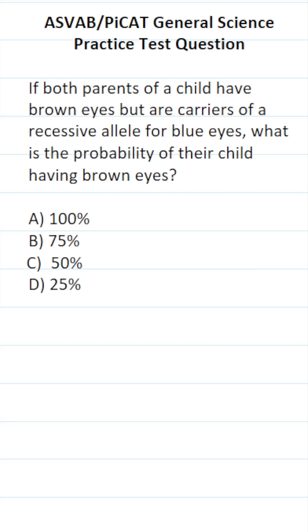This general science practice test question for the ASVAB and PICAT says, if both parents of a child have brown eyes but are carriers of a recessive allele for blue eyes, what is the probability of their child having brown eyes?